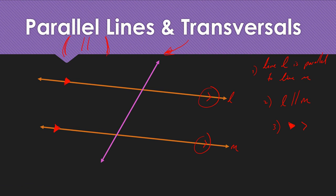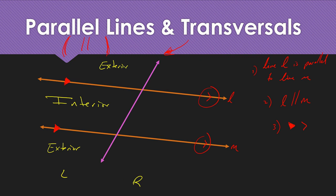We still have what we call our interior — that's between the two lines — and our exterior, which is everything that's not between the two lines. We still have our left side and right side of the transversal, so we still have alternate interior, consecutive, etc. The only difference now is that if an angle measures 120 degrees, because these two parallel lines have the exact same slope, they're going to have the exact same angle measure.